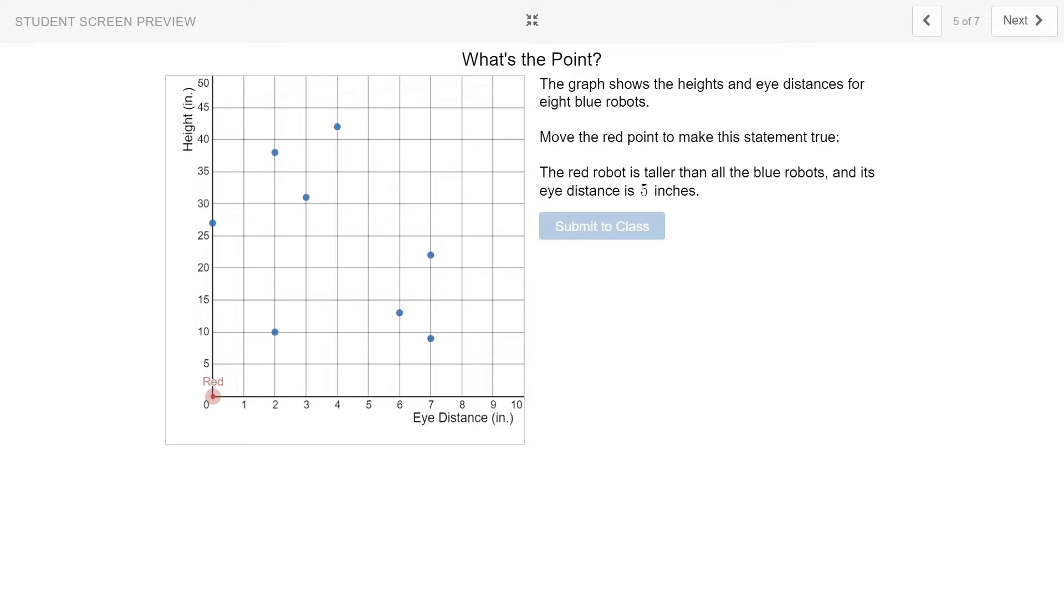Let's try another example. Here, we're asked what's the point. The graph shows the height and eye distances for eight blue robots, which I can see because there are eight blue points. Move the red point to make this statement true: The red robot is taller than all the blue robots, and its eye distance is 5 inches. So here is our red robot, and I know that I need to make it taller than all the blue robots. If I look over here at the height, I can see that the tallest robot, the tallest blue robot that is, would be the dot that has the highest height, which appears to be this point right here.